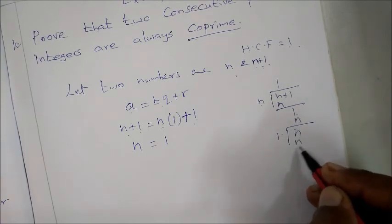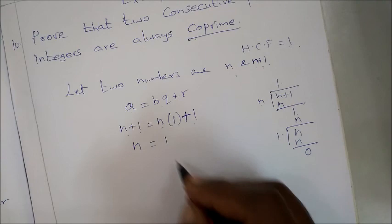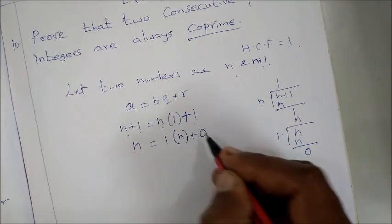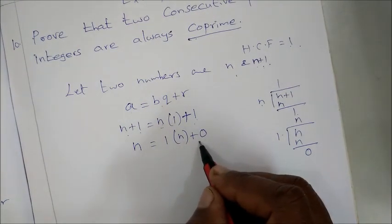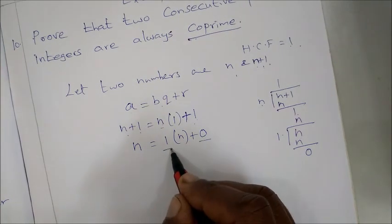1 divides into n, n times 1 plus remainder 0. So n times 1 plus 0, so remainder is 0. Since the previous remainder was 1, HCF is 1.